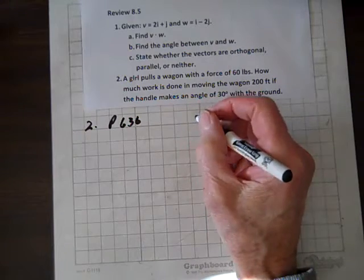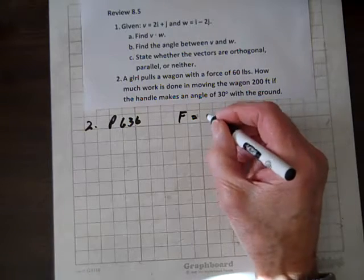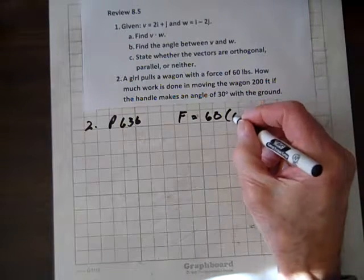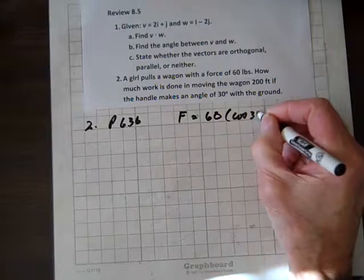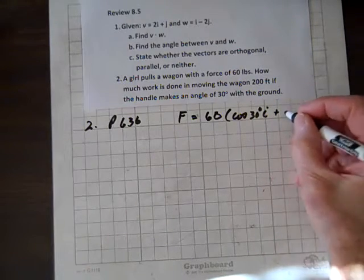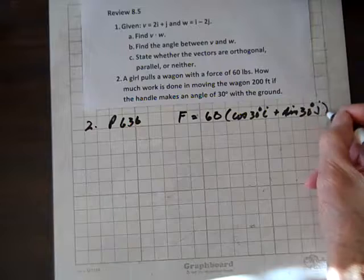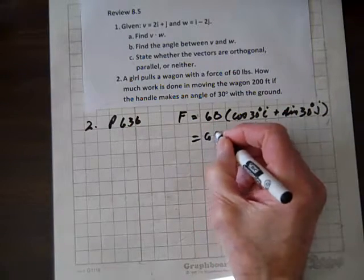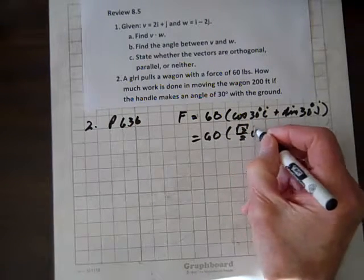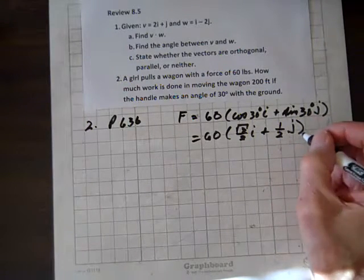if the handle makes an angle of 30 degrees with the ground? Well, we know that the force vector then equals the magnitude times the direction, so that's going to be 60 pounds, and the direction is cosine of 30 degrees i plus sine of 30 degrees j, which equals 60 times root 3 over 2 i plus 1 half j. Force vector.